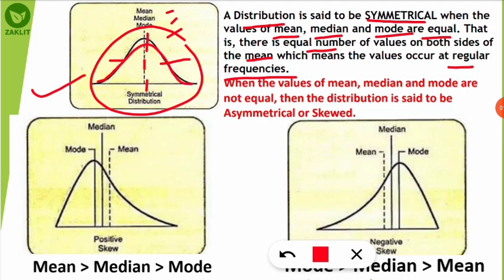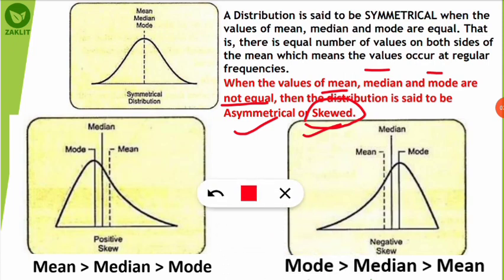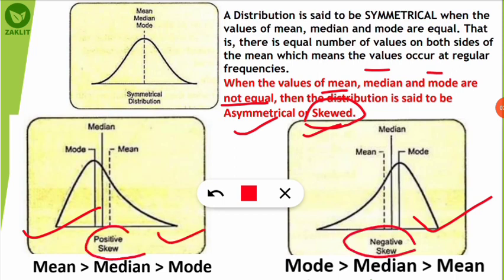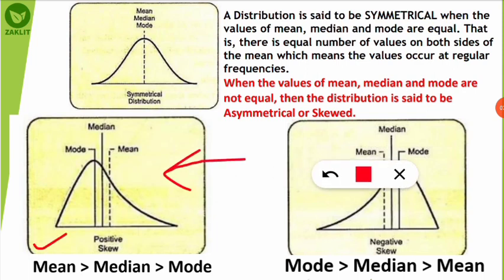An asymmetrical distribution is also known as a skewed distribution. When the values of mean, median, and mode for a distribution are not equal, it is called an asymmetrical or skewed distribution. There are two kinds: positively skewed and negatively skewed. In a positively skewed distribution, the mean is on the right-hand side of the median and mode. In a negatively skewed distribution, the mean is on the left-hand side of the median and mode.